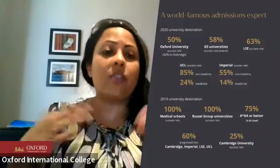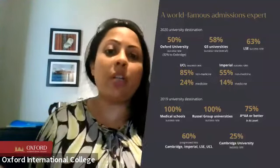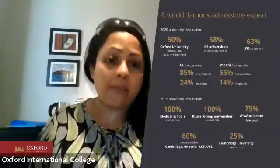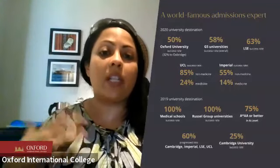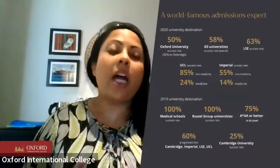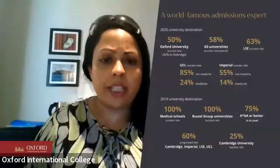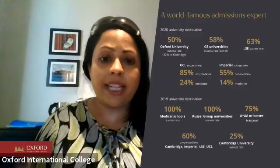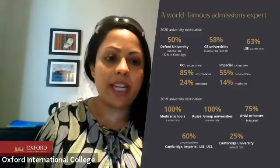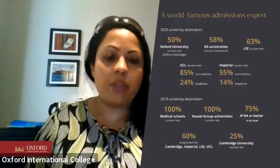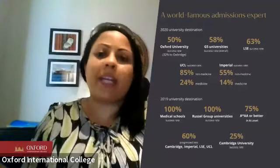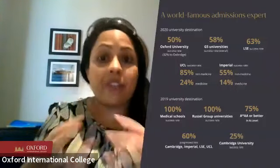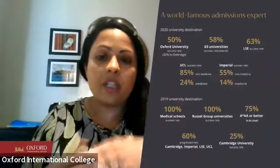In 2020 and 2019, before pandemic effects, we had a 50% Oxford success rate, 32% Oxbridge, 58% G5, 63% LSE/UCL, 85% non-medicine Imperial, 55% and 14% medicine Imperial. In 2019: 100% medical school, 100% Russell Group, 75% A*/A or better, 60% Cambridge/Imperial/LSE/UCL, and 25% Cambridge. Those years had no pandemic effects; those challenges will continue for the next few years.